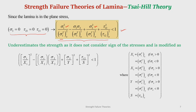The Tsai-Hill theory is slightly modified to take care of the sign of stresses. Instead of sigma 1Tu, it is written as X1, and instead of sigma 2Tu it is written as Y. If sigma 1 is positive, X1 is the ultimate longitudinal tensile strength; if negative, it is the longitudinal compression strength. Similarly, Y is the transverse tensile strength if sigma 2 is positive and the transverse compressive strength if sigma 2 is negative. S is always the shear strength since it is independent of sign in the material axis. This is how the Tsai-Hill theory is modified to account for the sign of stresses.